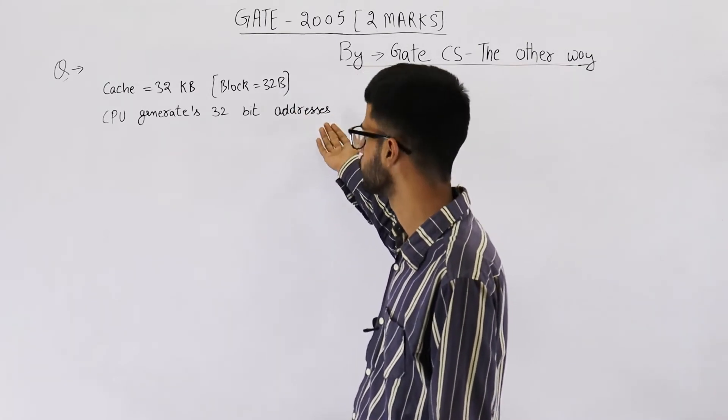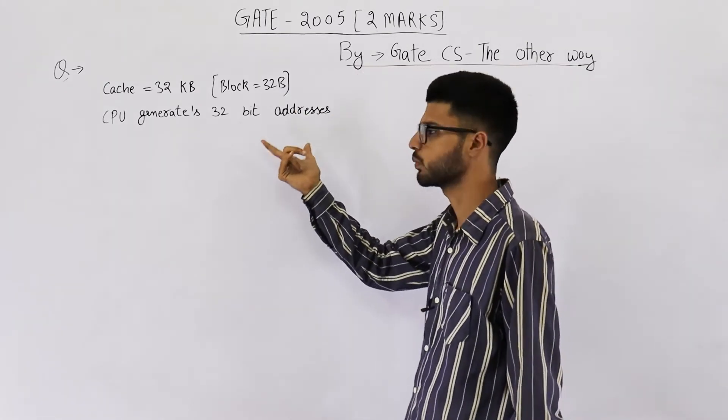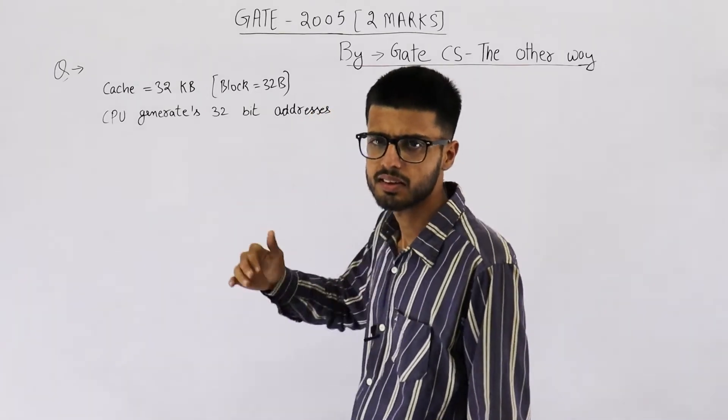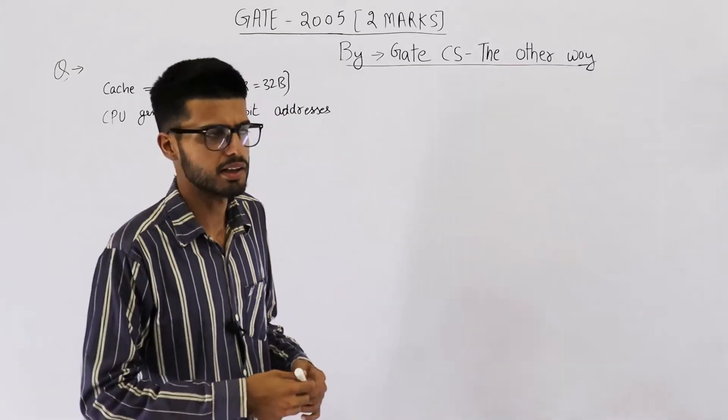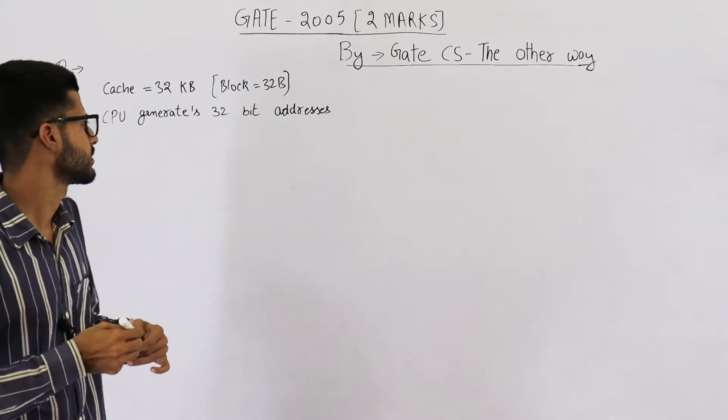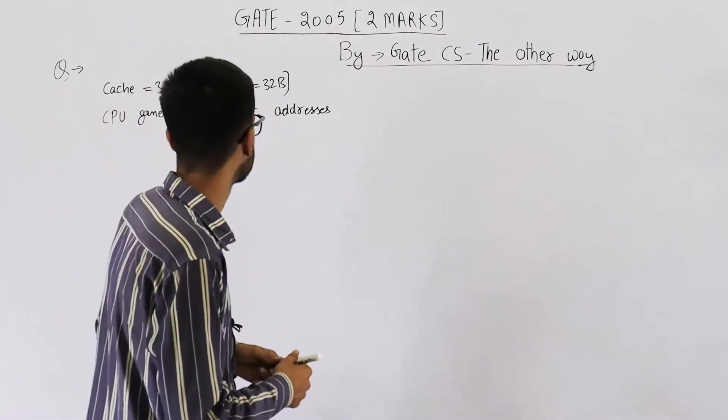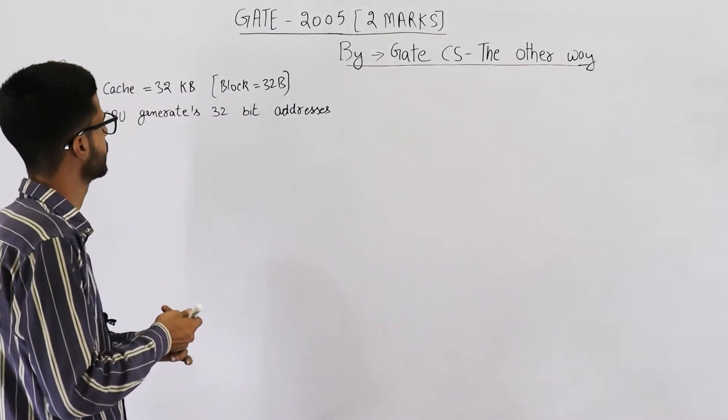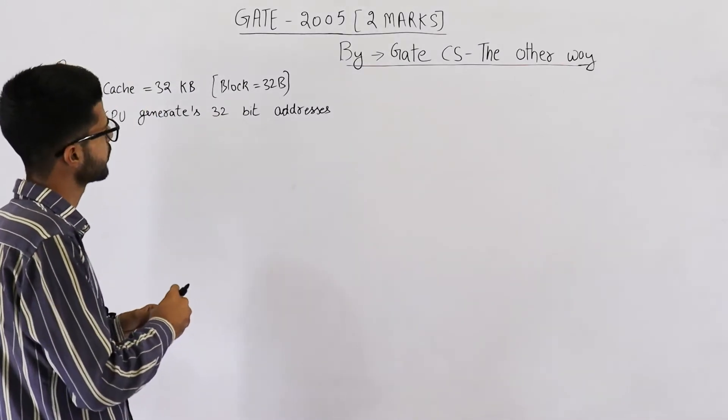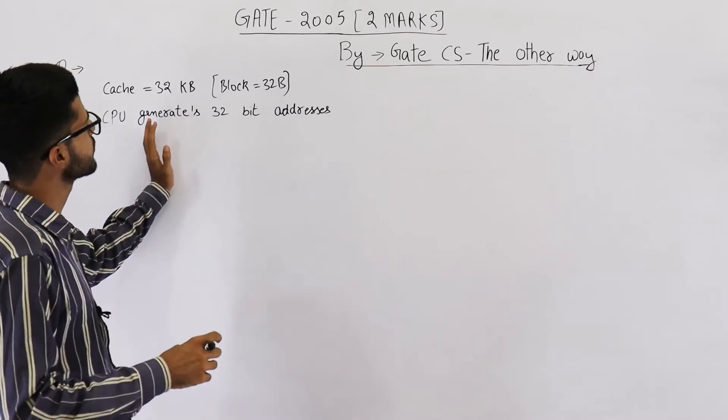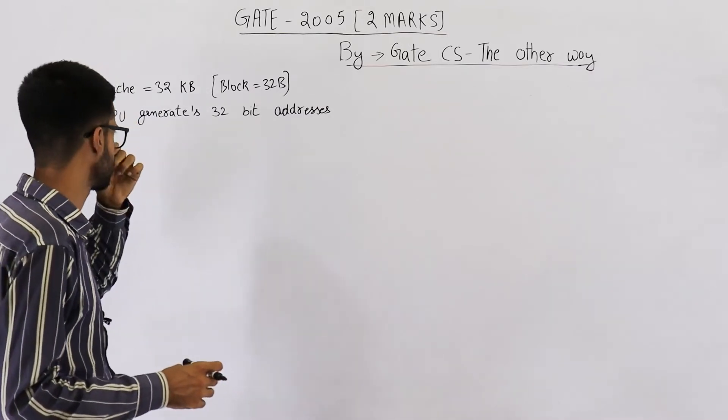Had they wanted to mention virtual address, some other hint might have been given. Like they might say that cache is a VIPT type of cache, that is virtually indexed and virtually tagged. But because nothing is said, you can safely assume that this is physical address only.